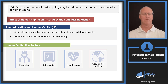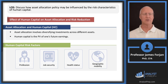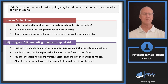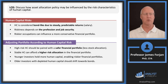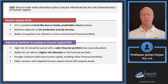Let's end with a conversation linking back to human capital from the beginning of this reading. Human capital is the present value of one's future earnings. Risk factors include profession, job security, health status, and geographic mobility. Human capital looks a lot like a bond because it provides steady and predictable returns if the job is salaried. Riskier occupations can lead to a more conservative financial portfolio.